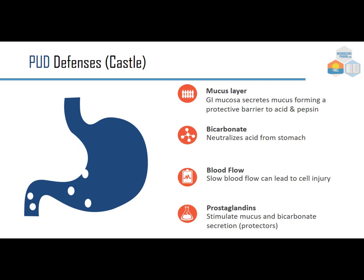The defenders include the mucus layer — the GI mucosa secretes mucus forming a protective barrier to acid and pepsin. Bicarbonate neutralizes stomach acid. Normal blood flow is important because slow blood flow can lead to cell injury. Prostaglandins stimulate mucus and bicarbonate secretion, making them key protectors.